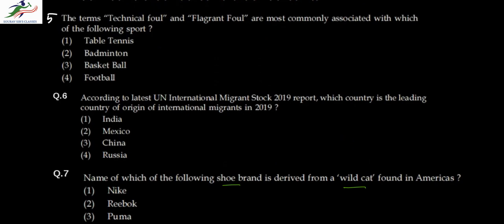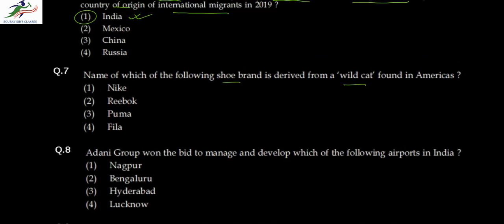You may not know these terms if you don't follow basketball, but if you follow table tennis, badminton, or football, these terms don't appear there. There is a foul in football but not 'technical' or 'flagrant' foul. So the only option left is basketball. Question six: according to the latest UN International Migrant Stock Report of 2019, which country is the leading country of origin of international migrants? This is a no-brainer — India has the highest number of migrants, especially to the US and Middle East. Question seven: the name of which shoe brand is derived from a wildcat found in America? That's Puma — so it's option three.